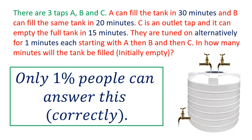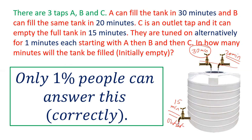Friends, in this video the question is: there are three taps A, B and C. Tap A can fill the tank in 30 minutes. Another tap B can fill it in 20 minutes. And there is a third pipe C which can empty it in 15 minutes. So A and B are inlet pipes and C is the outlet pipe.